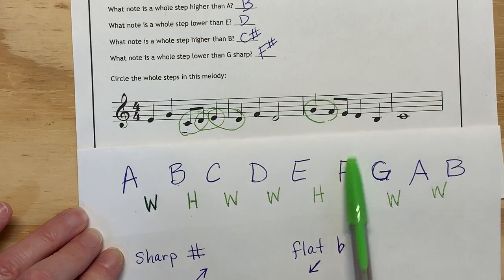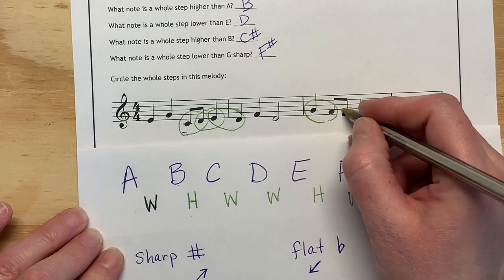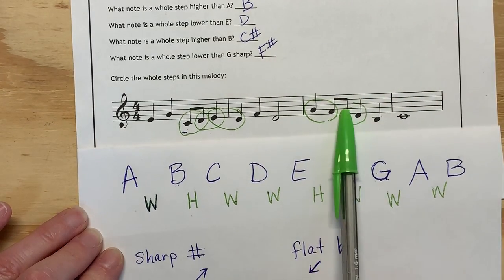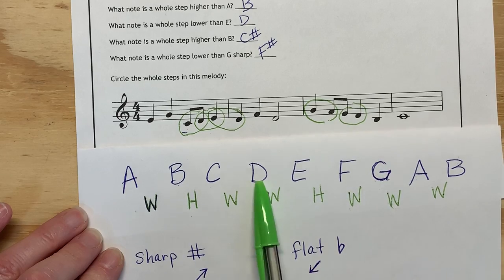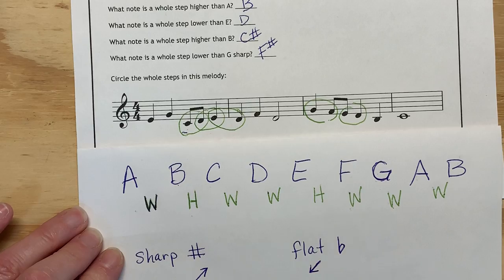Watch out, F to an E, there's the half step. E to a D, whole step. D down to, that's a B, that jumps too far. But a B to a C, nope, that's only a half step.